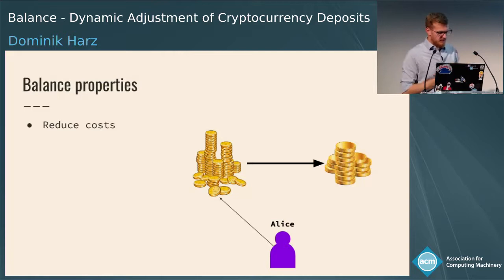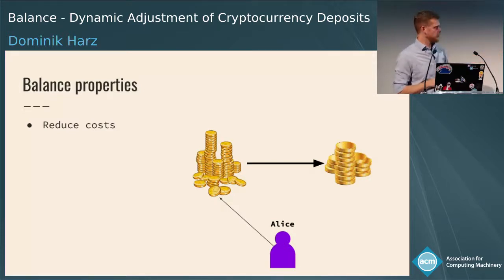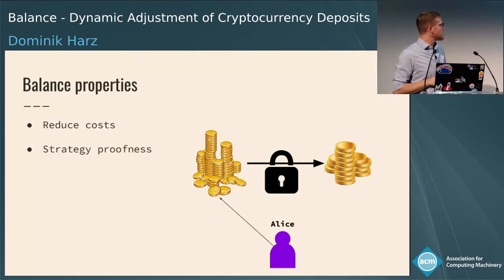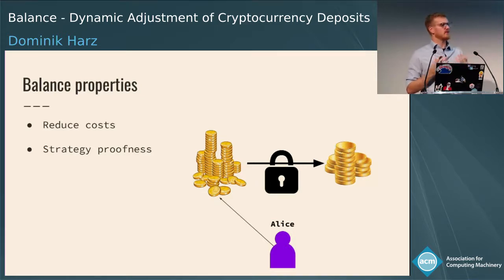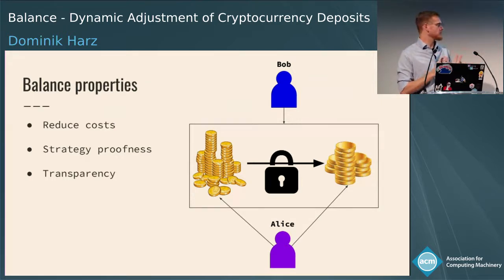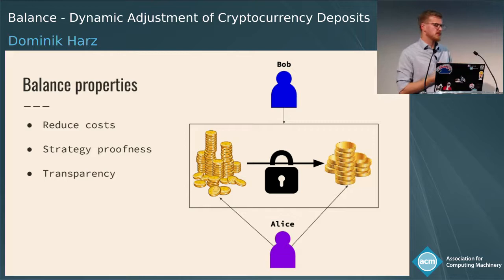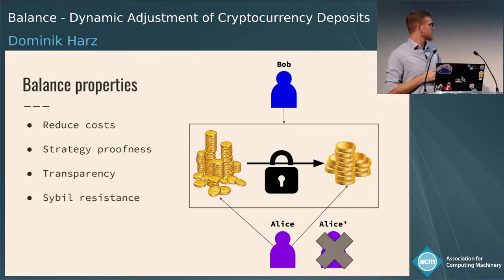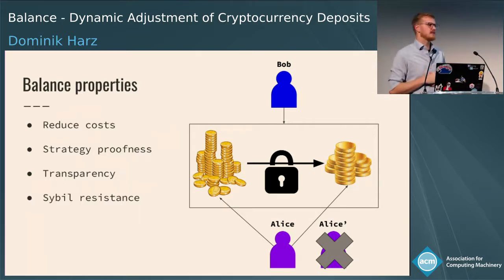From these assumptions, Balance gives four properties. We can reduce the cost of locking collateral overall. We can show that this is strategy-proof — there's no additional incentive for Alice to misbehave even if her collateral is lowered. We can show that Bob doesn't need to care whether Alice lowered her collateral or not and can choose any agent to interact with regardless of deposit size. And the protocol is Sybil-resistant: even if Alice creates multiple identities, she cannot reduce her collateral further.